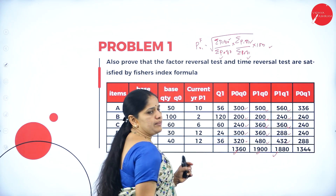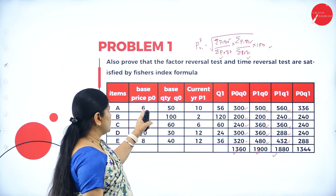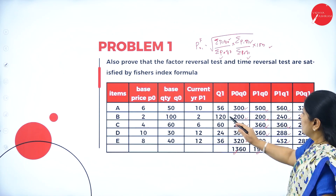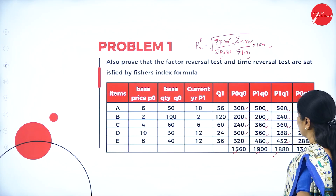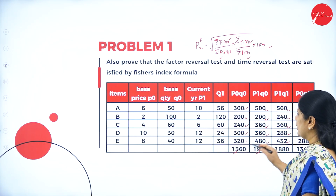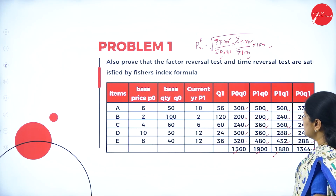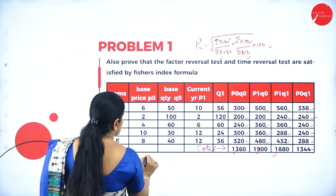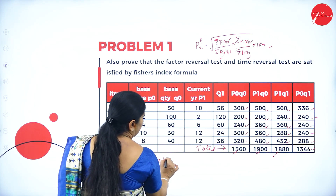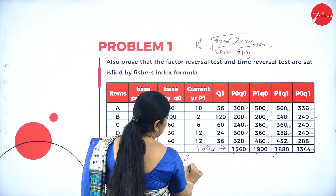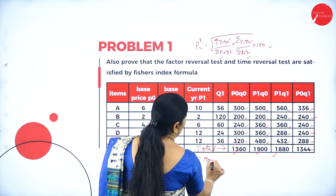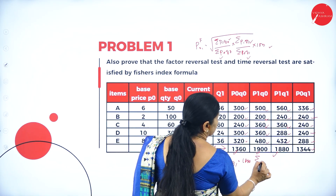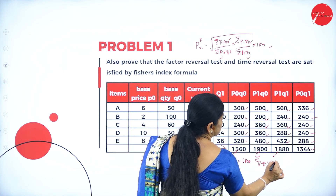When we add all these values, we get the totals. Next, P0Q1 — that is P0 × Q1: 6×56 = 336, 2×120 = 240, 4×60 = 240, 10×24 = 240, 8×36 = 288. So σP0Q0 = 1360, σP1Q0 = 1900, σP1Q1 = 1880, and σP0Q1 = 1344.